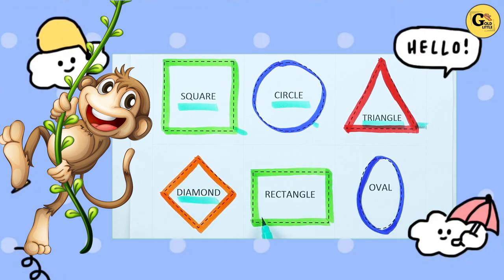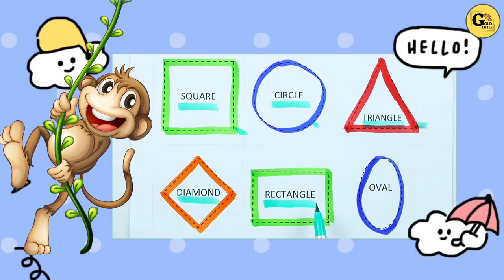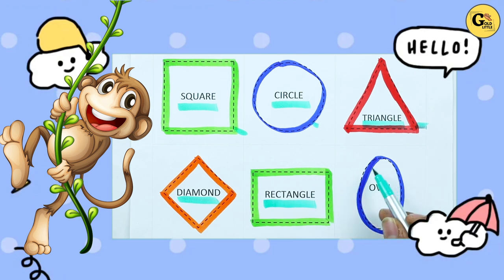Which shape is this? Rectangle. R-E-C-T-A-N-G-L-E. It's a rectangle with green color. Which shape is this?